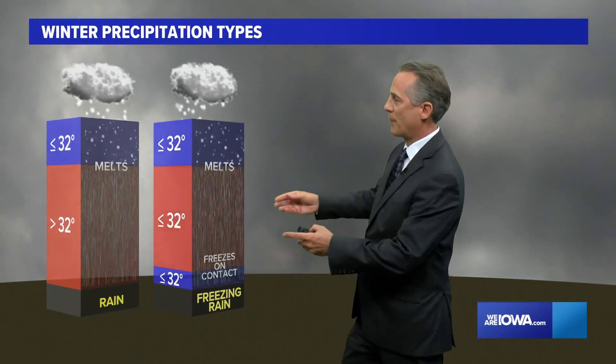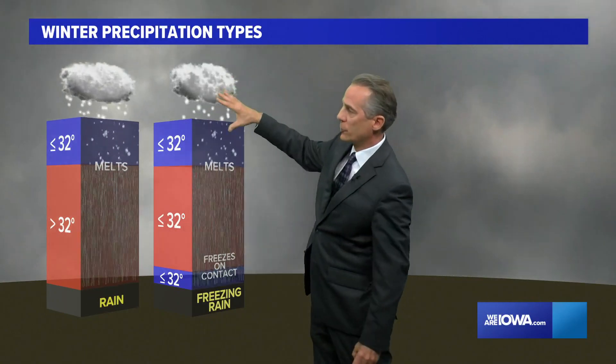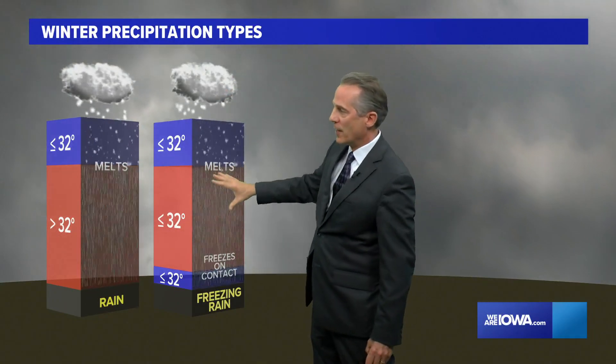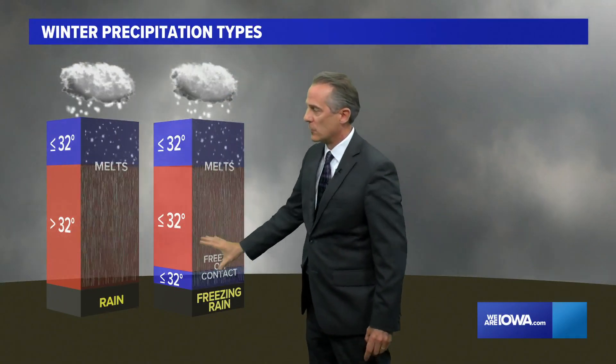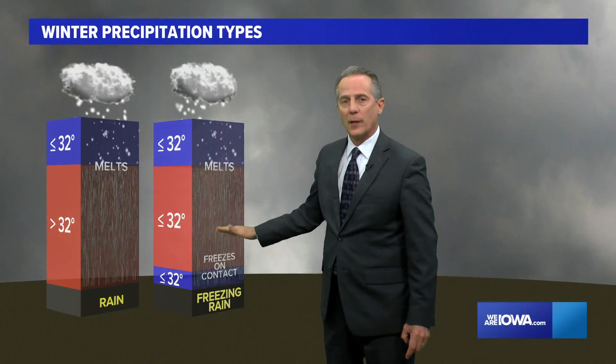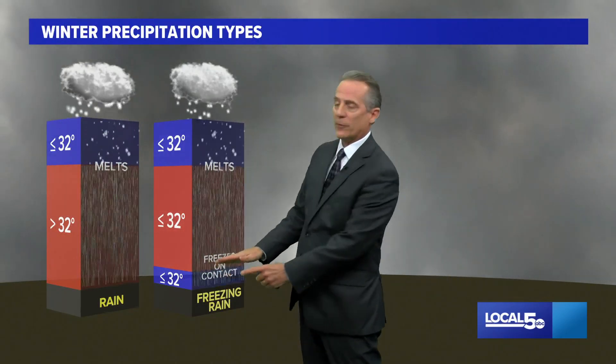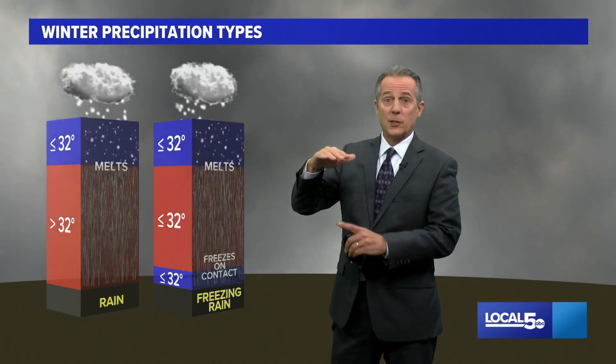This is what happens when you get freezing rain. It starts to snow and then it melts in this little layer right here — a warm layer in the atmosphere above our heads. And then right down near the surface,